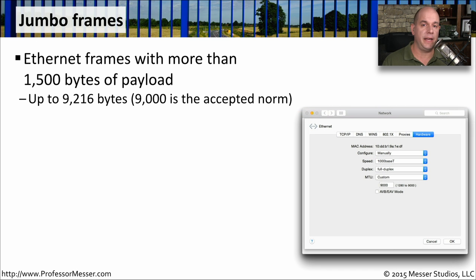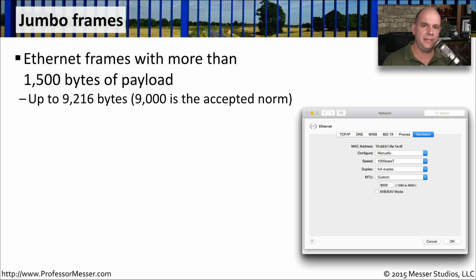The original Ethernet specification limited the Ethernet frame size to 1,500 bytes of payload — that's the data you put inside of an Ethernet frame. So if we're sending information back and forth to storage devices, we can only put 1,500 bytes in every single frame. It would be much more efficient to increase the size of that payload so we could send fewer, very large frames.